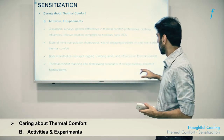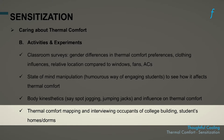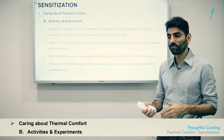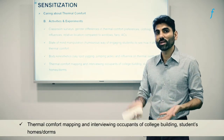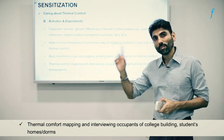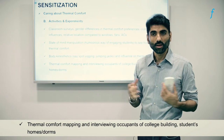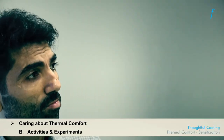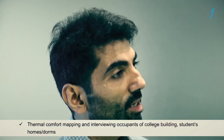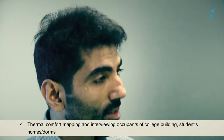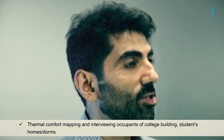One could also conduct surveys and mapping exercises using worksheets to see whether different parts of the college campus, dorms, or homes create variable thermal comfort conditions. For example, do people in the higher floors of a building — where warm air rises — report less thermal comfort than those in the basement? Do people facing west report different comfort levels than those facing north or east? These could be interesting things to map and learn from experientially.